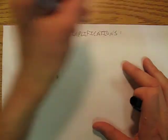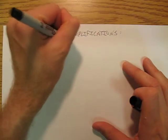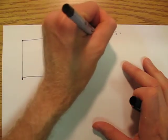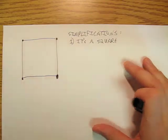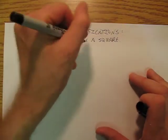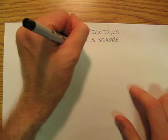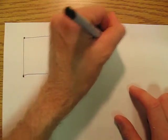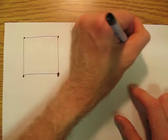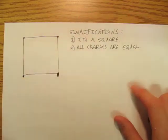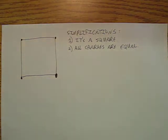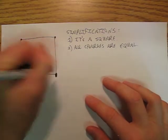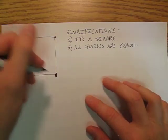First one is, the first simplification is it's a square and the second simplification is that all the charges are equal. Okay so let's find the force on this one.